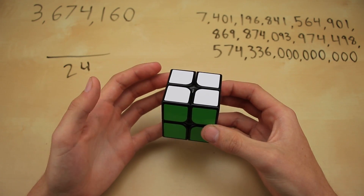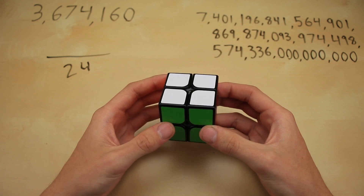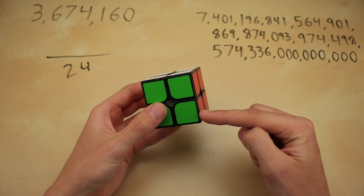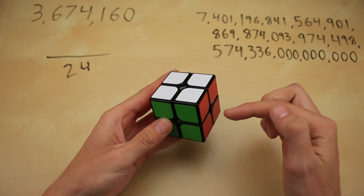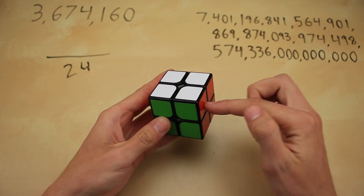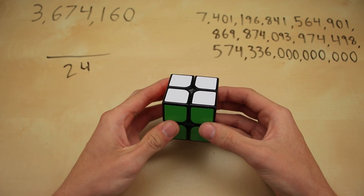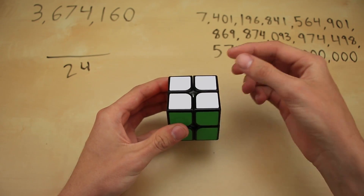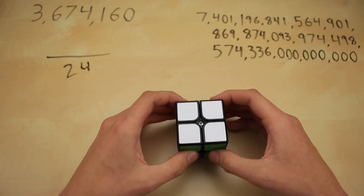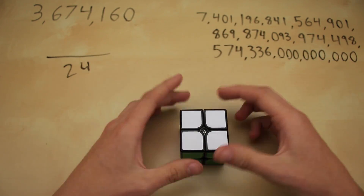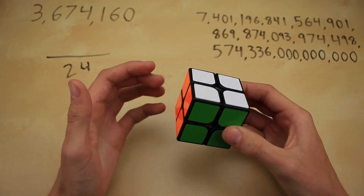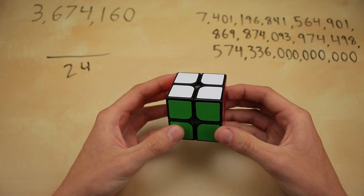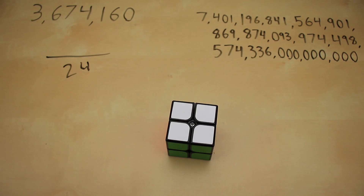From here on out, our calculation is going to be exactly the same as a 3x3, except it's actually going to be quite a bit easier because we only have one type of piece to deal with. We have eight corners around the cube, and each of those eight corners has three different colors on it. We start off by calculating the number of different permutations of these corners — the number of different ways that you can arrange eight different objects given eight slots — and then we calculate the number of different combinations of orientations of those eight corners, given that they each have three different ways that they can be oriented.